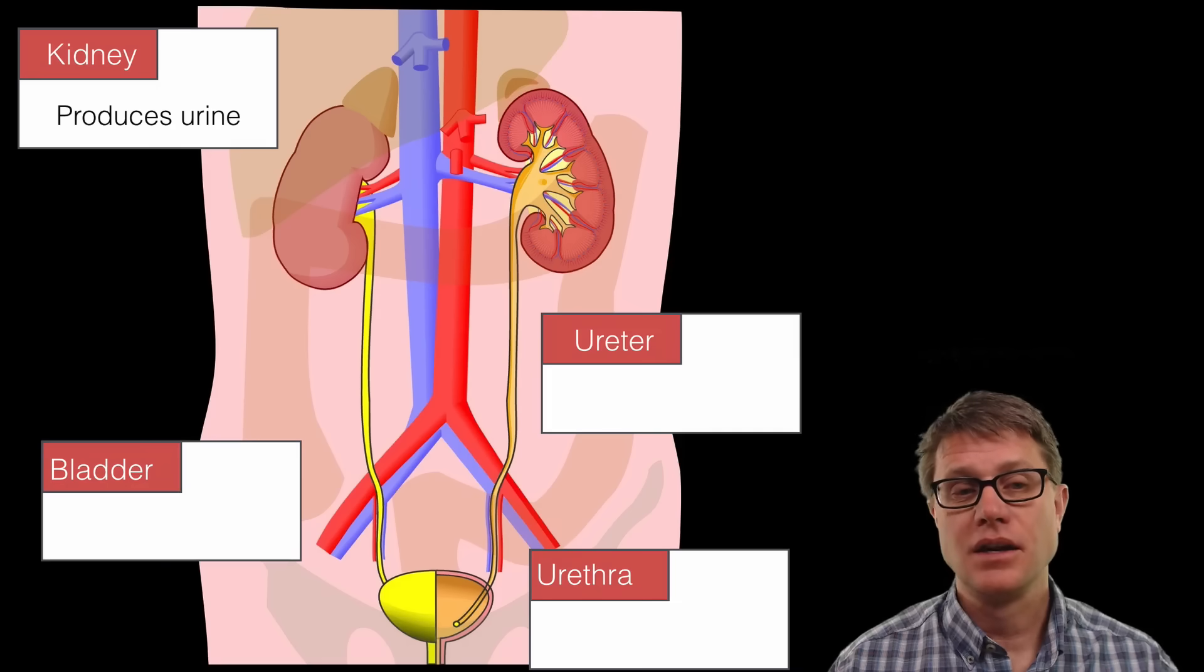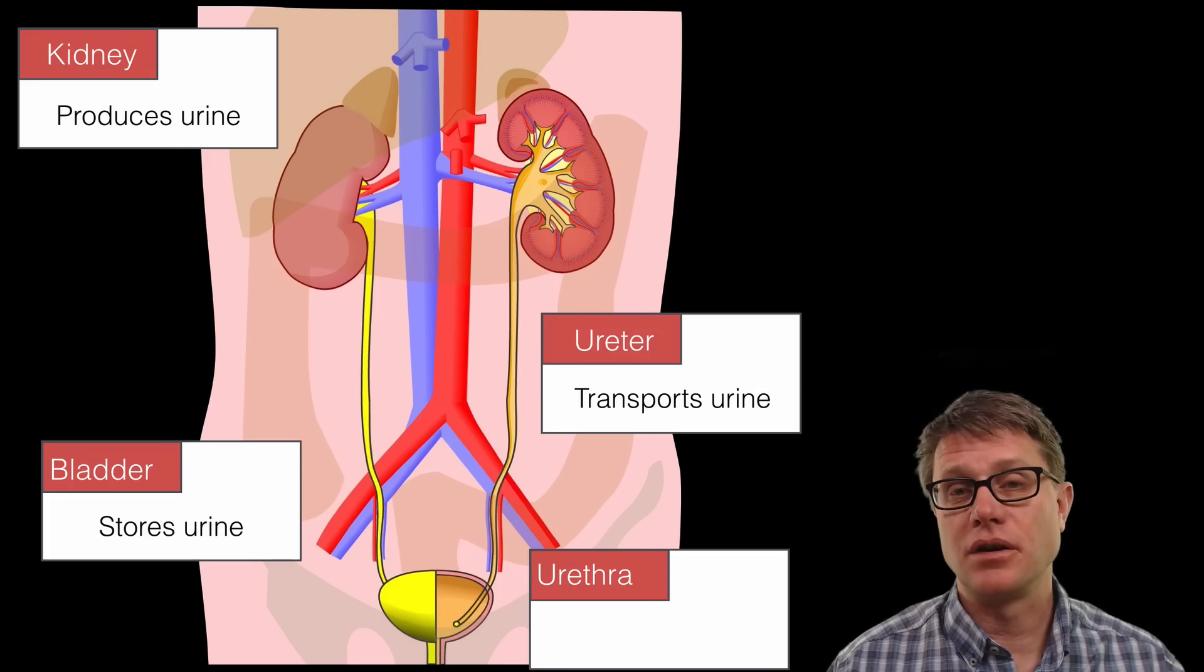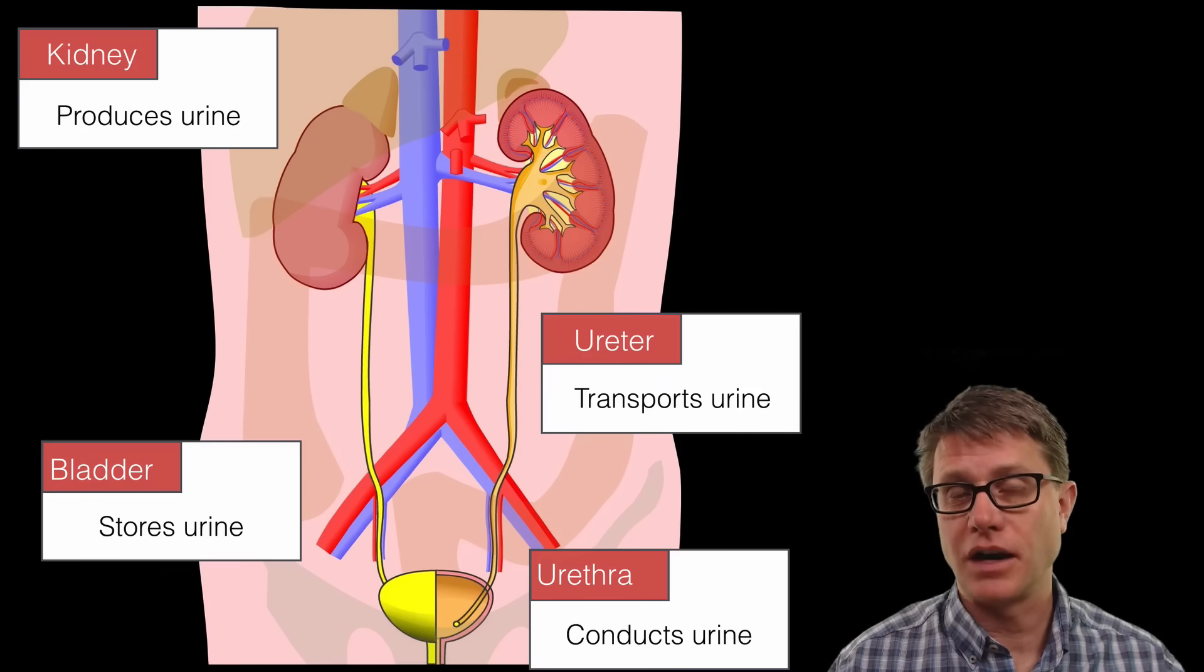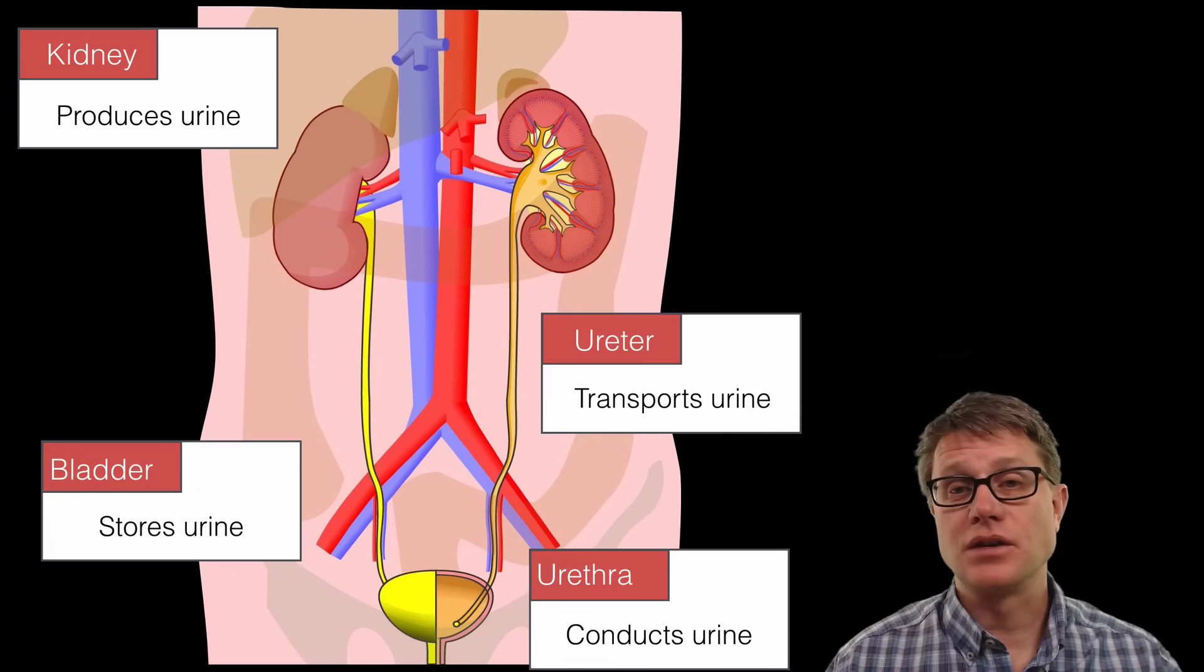What is the role of the kidney? The role is to produce urine. From there it's transported to the bladder through the ureters, and then from there it's stored and eventually conducted into the environment. That's how we lose this waste.